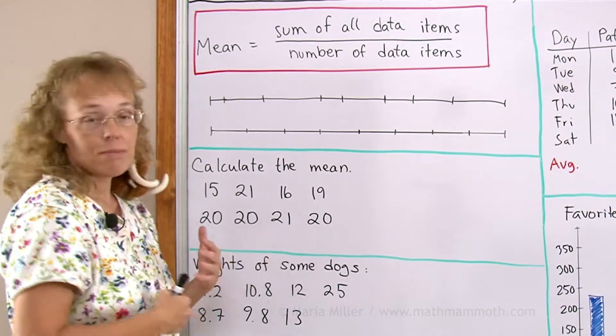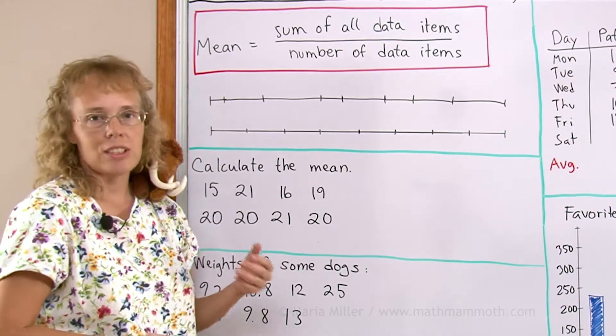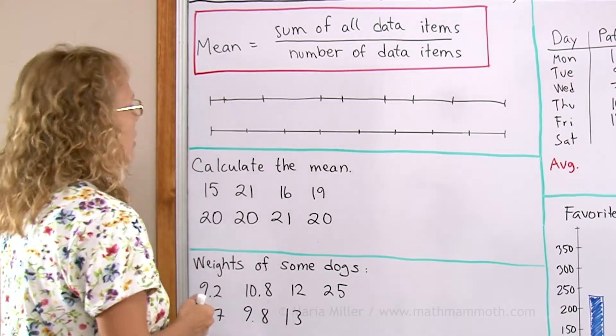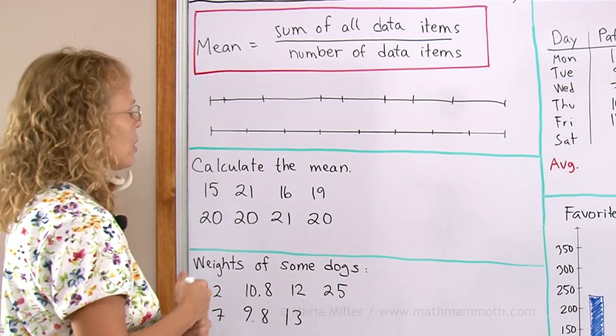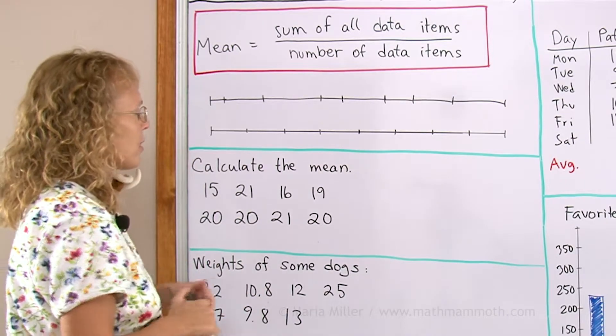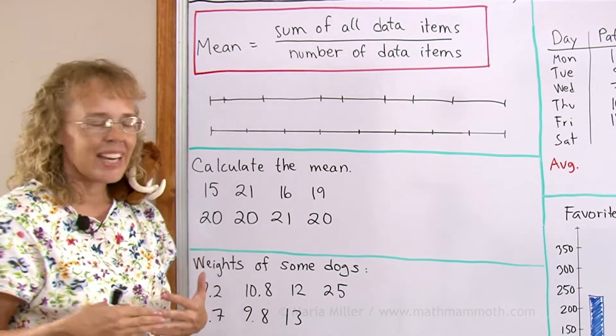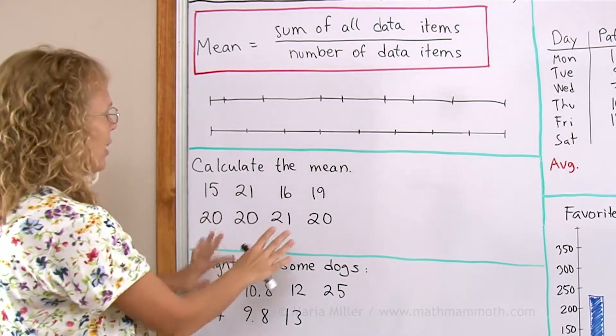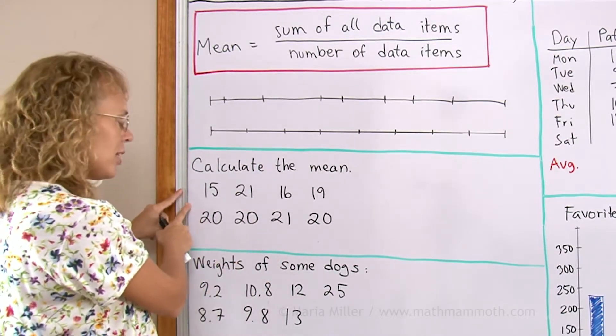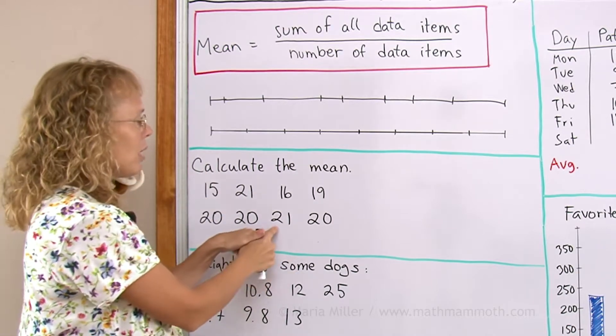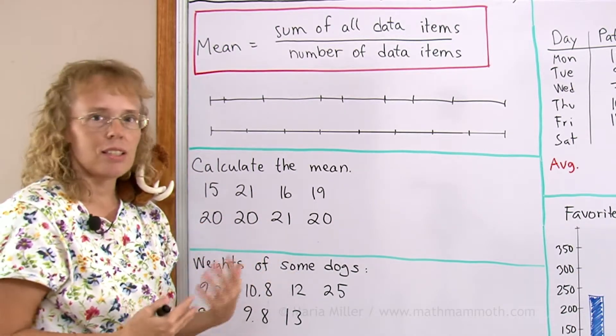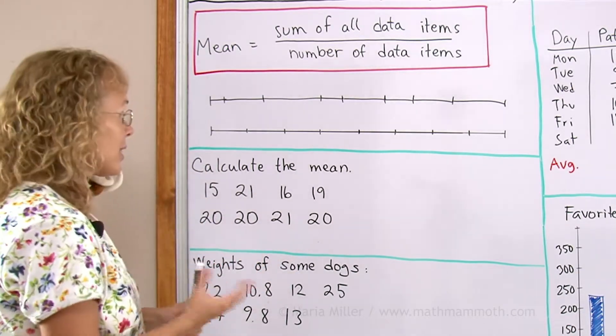Let's say that these are ages of eight students in some class or club. To calculate the mean, we will add them and then divide by eight. And our mean will be somewhere in between. It's not going to be less than 15. It's not going to be more than 21. It's going to be somewhere like maybe 19 or 20. I'm guessing 19.